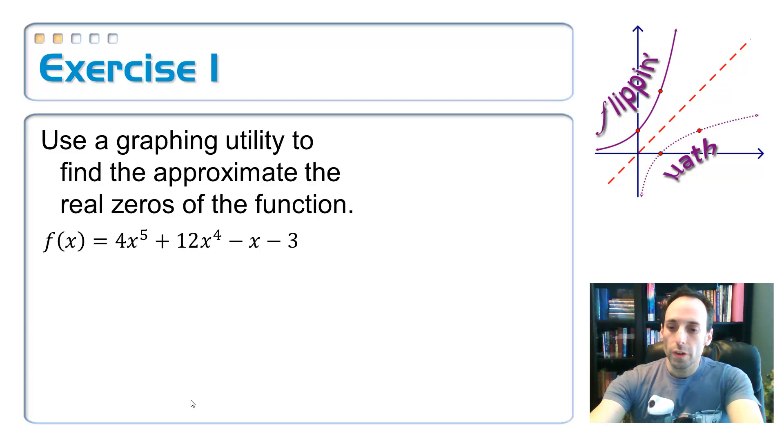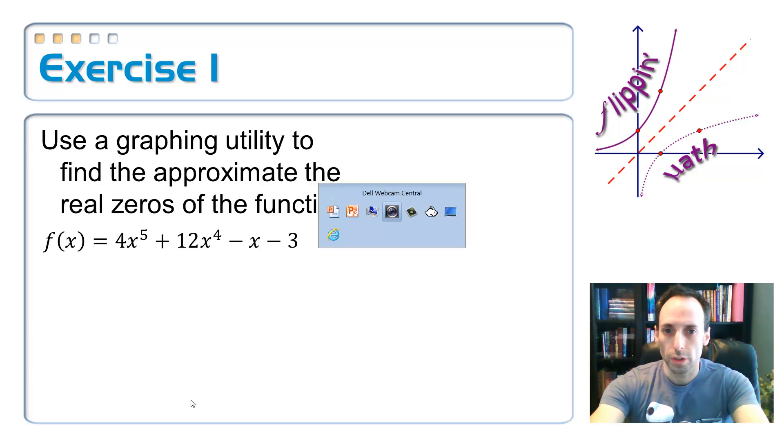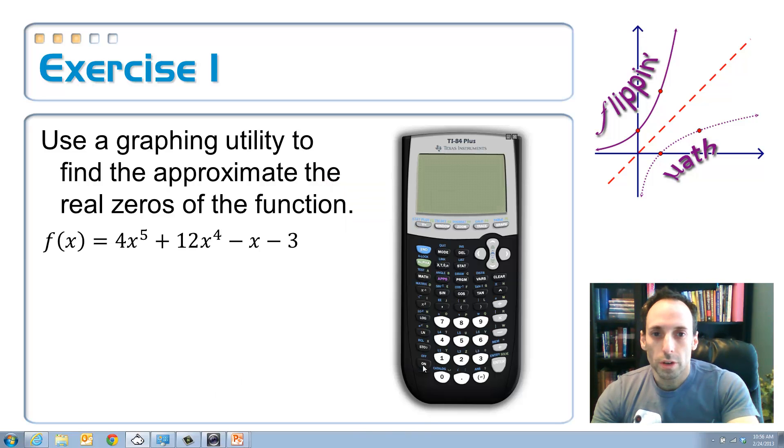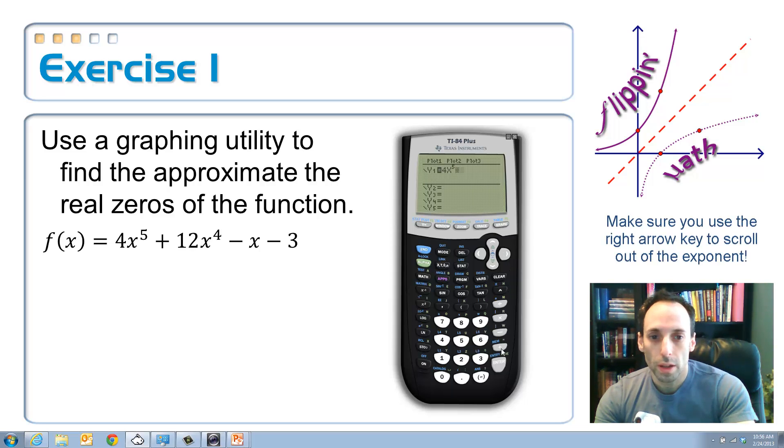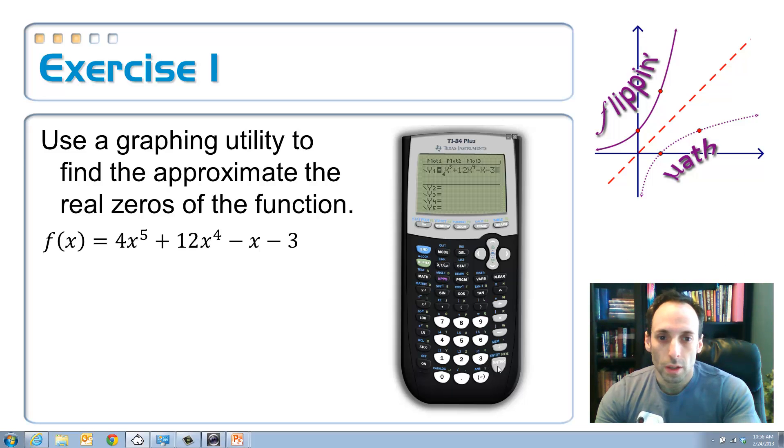Okay. So, we're going to first turn on this calculator here. Here we go. Turn it on. Go to y equals and let's type in our equation. So, 4x to the fifth power. Got to use the caret for the fifth power. You have to scroll out of it and then plus 12x to the fourth, scroll out of it, minus x, minus 3.